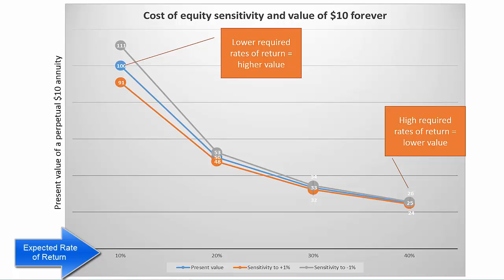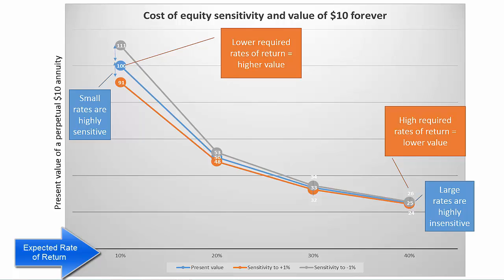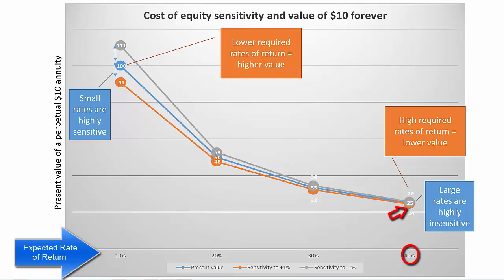The value of a $10 cash flow stream at 10% is $100, where the same cash flow stream valued at 40% is just $25. Secondly, the smaller the discount rate, the more sensitive it is to any change. In this chart, I have varied the rate of return by just 1% one way or another. At the 10% cost of equity level, this made a huge difference in value — almost $10 one way or the other — whereas at the 40% rate of return, the difference in value was only $1.